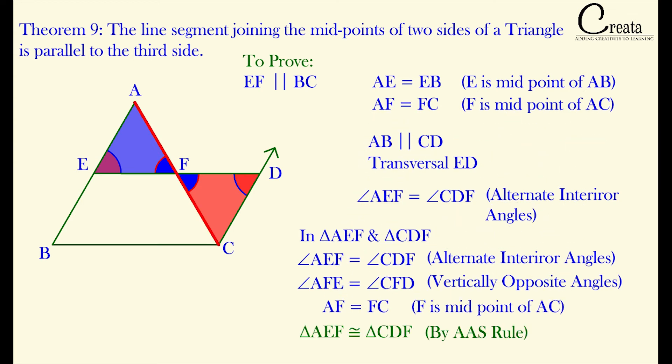So by AAS rule that is angle angle side rule, we can say triangle AEF is congruent to triangle CDF. Both of these triangles are congruent to each other.